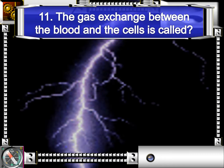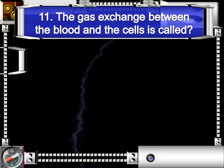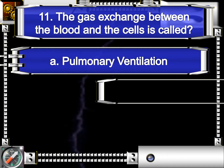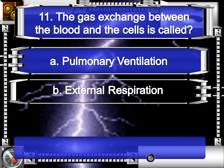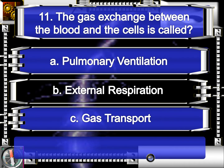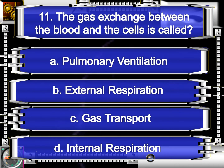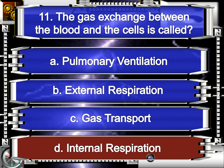Number 11. The gas exchange between the blood and the cells is called? Letter A, pulmonary ventilation. Letter B, external respiration. Letter C, gas transport. Or letter D, internal respiration. The answer is letter D, internal respiration.